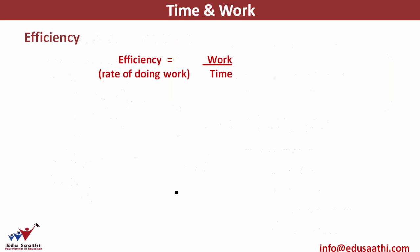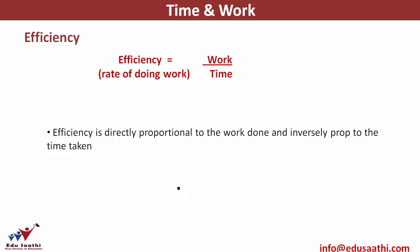Let's look at the concept of efficiency. Efficiency is the rate of doing work — how much work is done per unit time. A person who is more efficient will be able to do more work in the same amount of time, and a less efficient person will do less work. Efficiency is directly proportional to work done and inversely proportional to the time taken, keeping other things constant.